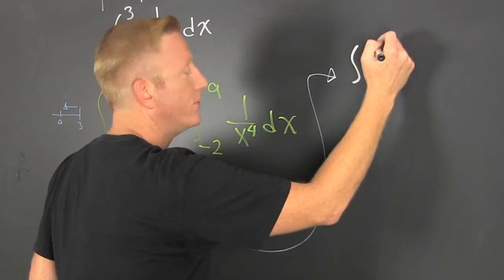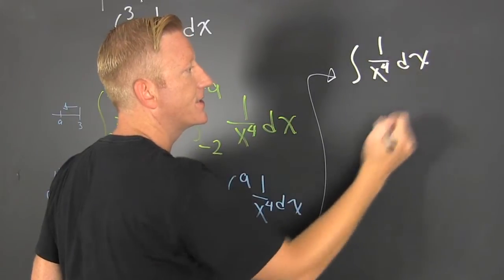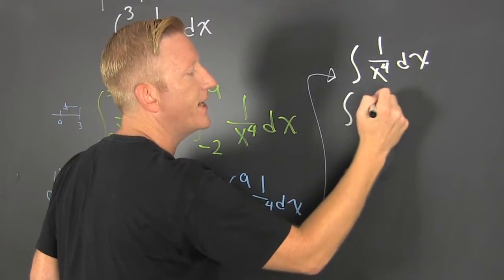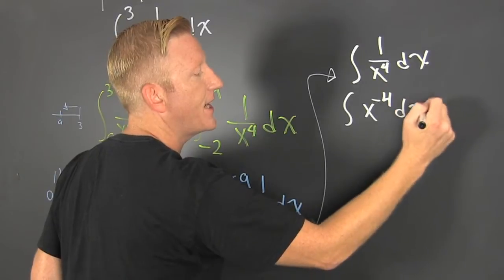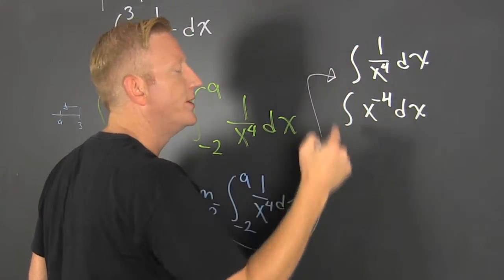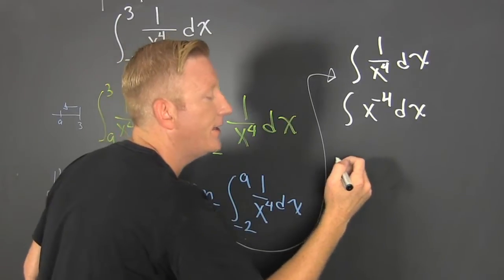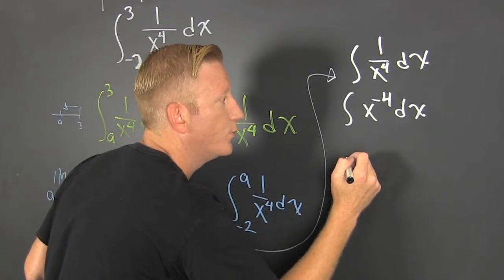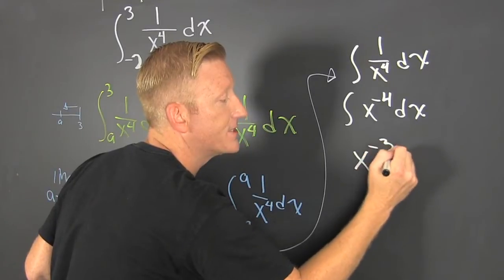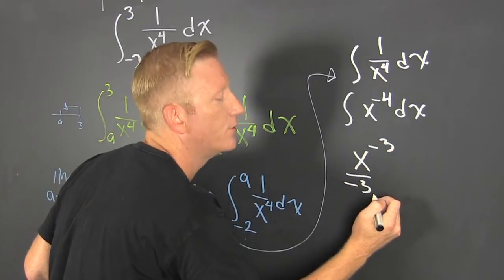Let's just look at the integral of 1 over x to the 4 dx. That's the integral of x to the minus 4 dx — you can integrate that. You add one to the exponent and divide by it.